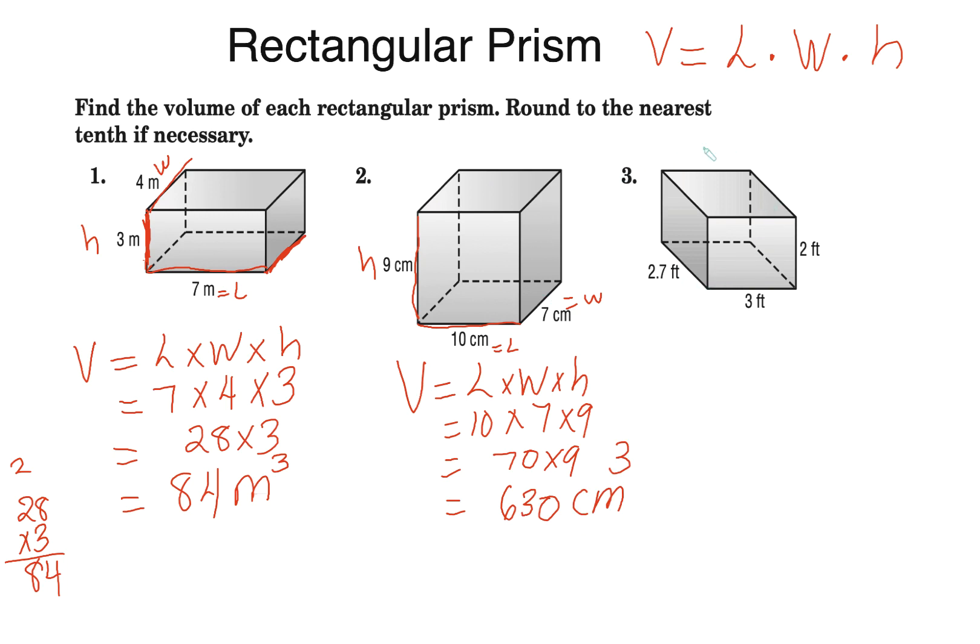Again I have another rectangular prism and I'm finding the volume. Volume equals length times width times height. Here's my length which is 3. Here's my width which is 2.7. And here's my height which is 2. With this one I'm not going to use the calculator. If I'm on the non-calculator and I have to multiply this I would multiply the 2 with the 3 to make it easier on myself. 2 times 3 is 6. And then multiply by the 2.7.